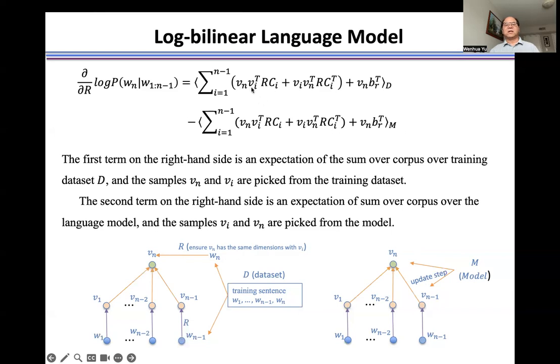That means, for example, we sample this Vn on the dataset, we sample this Vn on the language model. For the first term, for example, we use the training sentence as the input. We calculate this Vi and this Vn, and then we use these samples to calculate the expectation of this sum over the training dataset.